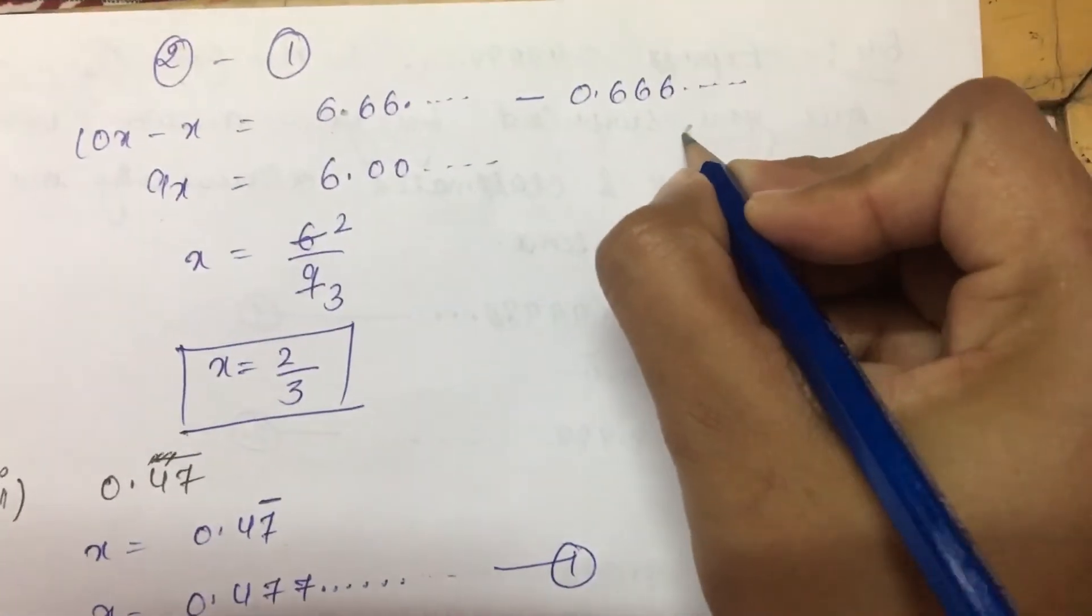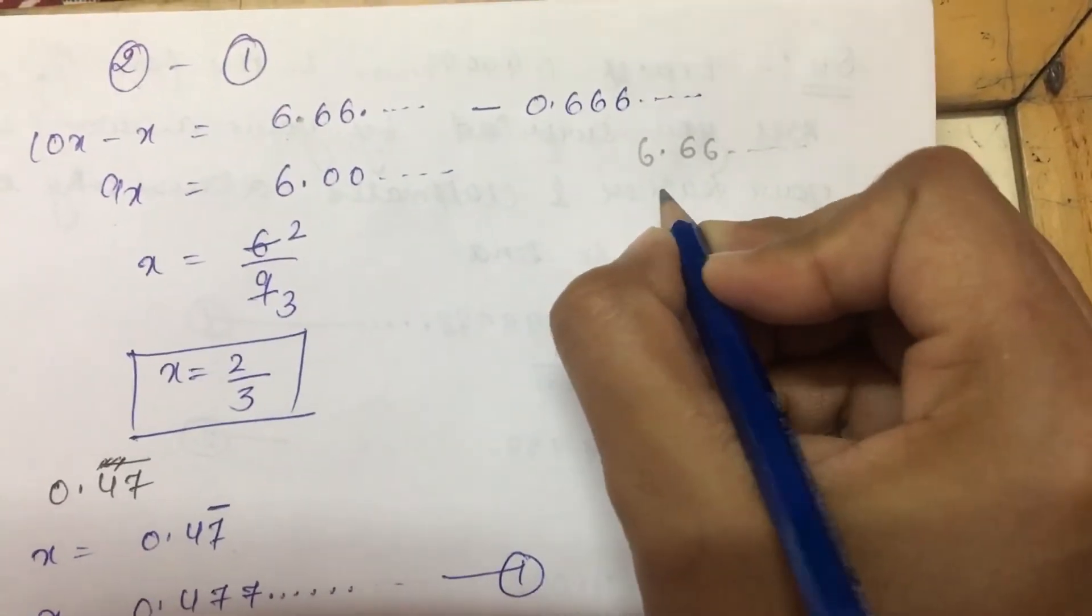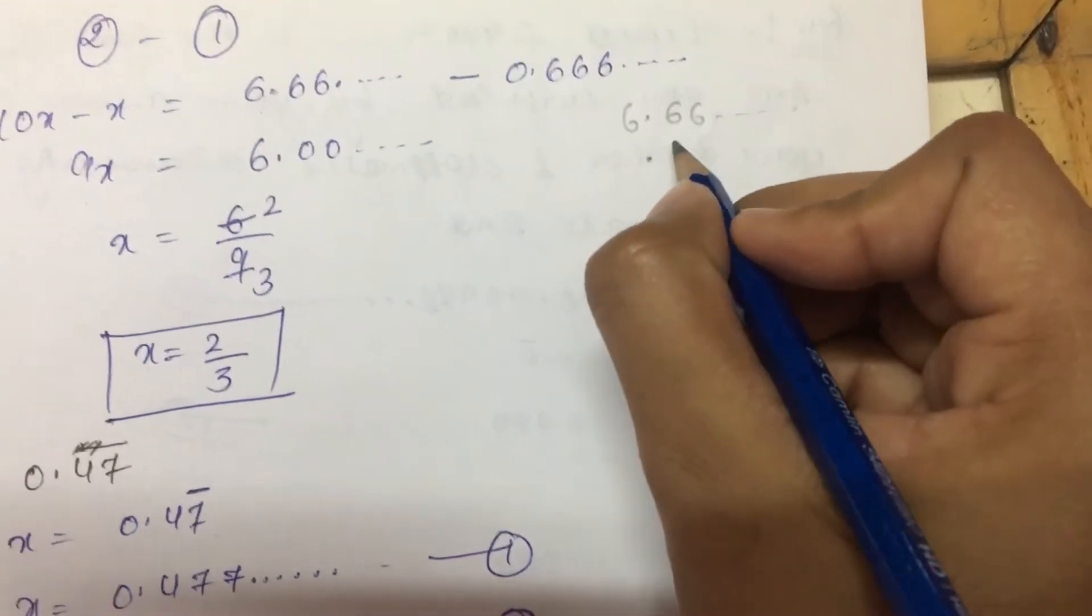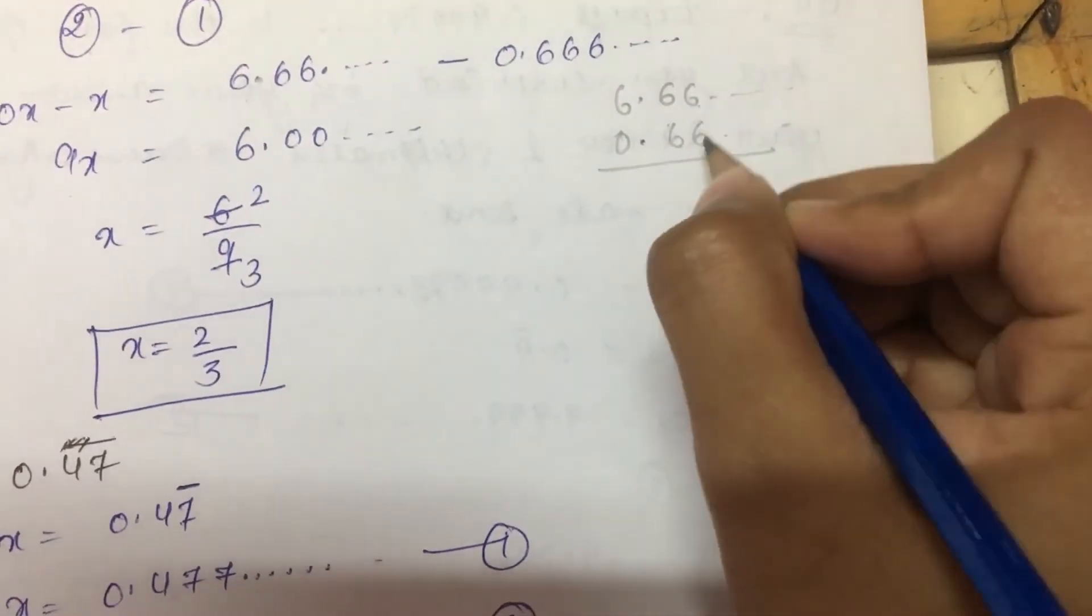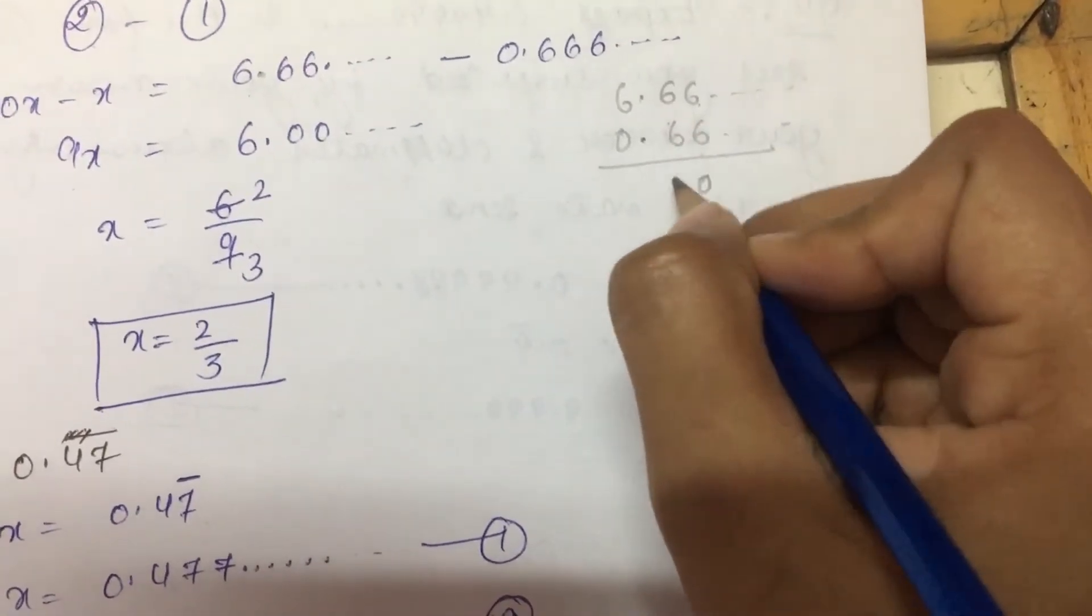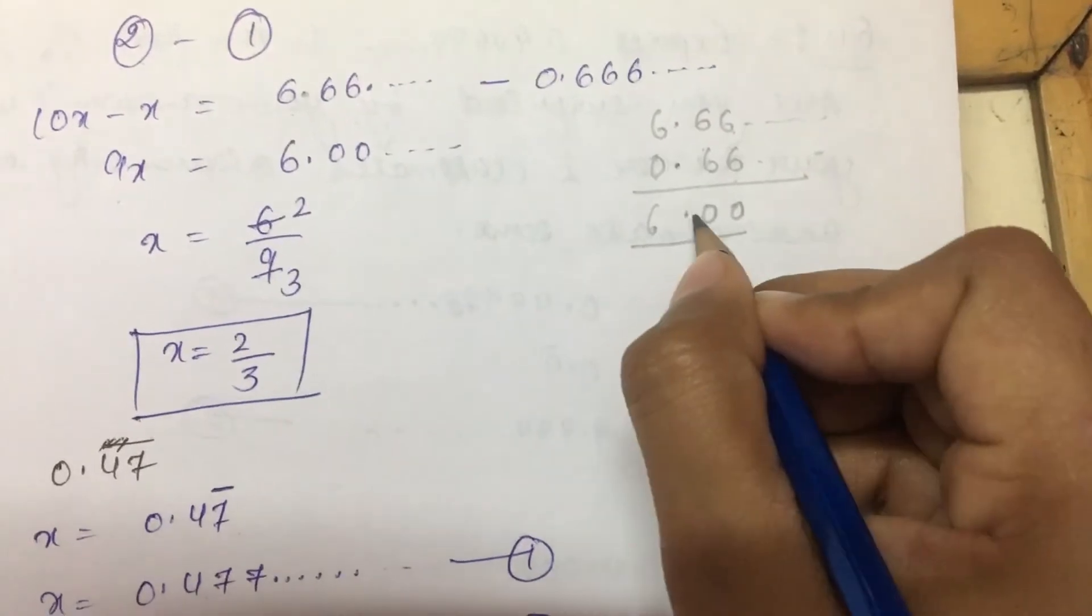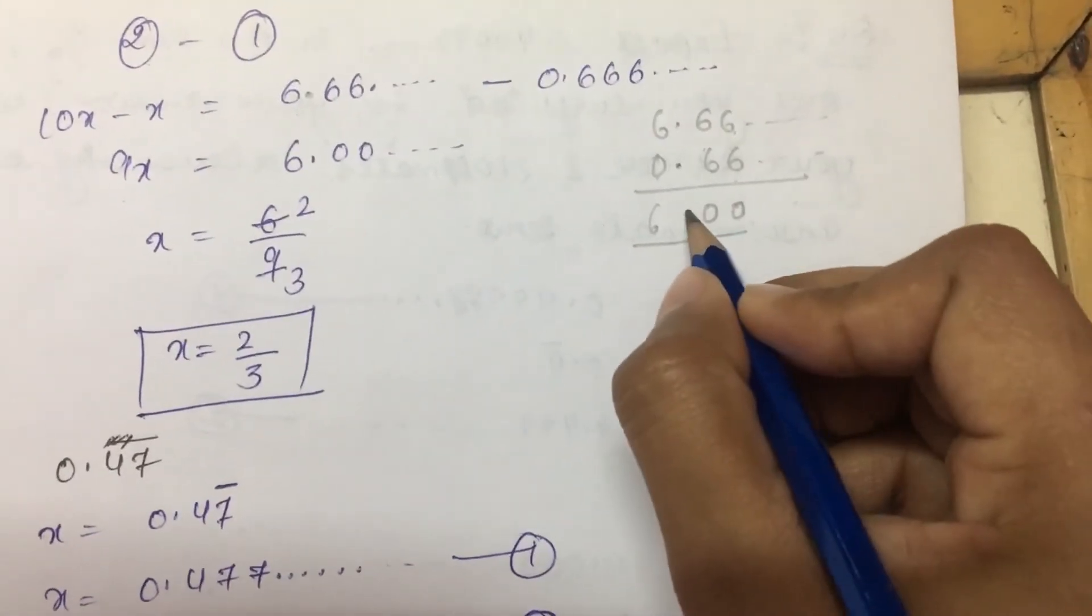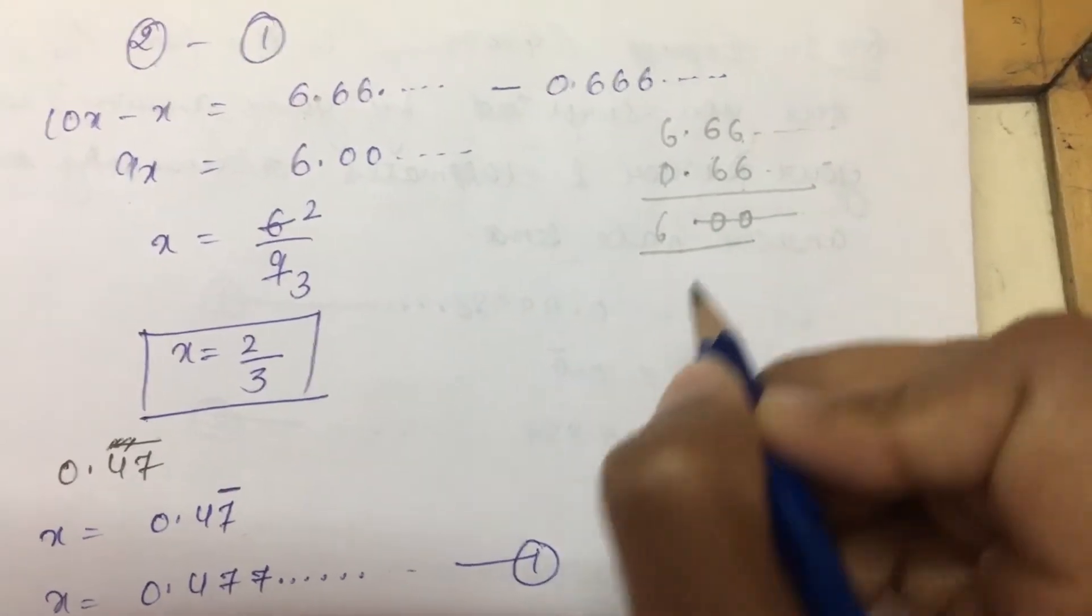When we subtract, we get 9x on the left. On the right, 6.666 minus 0.666 equals 6.00. After the decimal we have no value, so we can write it as 6.